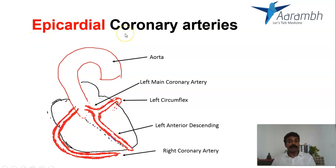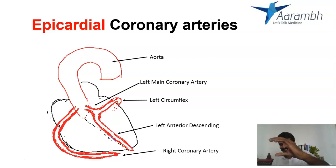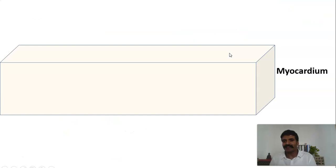The coronary arteries are more accurately called epicardial coronary arteries, because they lie on the outer surface of the heart. So we have the epicardium, pericardium, myocardium, endocardium, and the ventricular cavity.